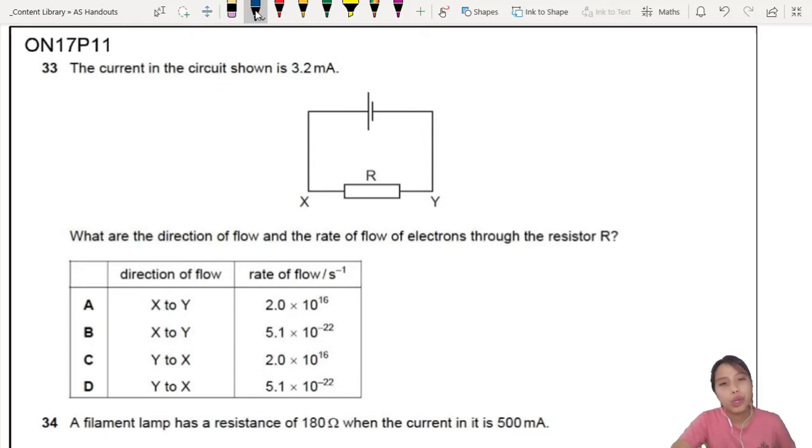By the way, the current in the circuit shown is 3.2 mA. If you did any lab with meters measuring current, you'll realize that it's actually bouncing up and down, right? 3.2, 3.1, 3.4, 3.0, 2.9. It's bouncing up and down.